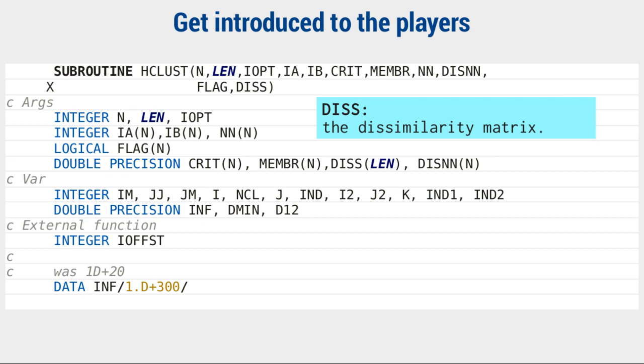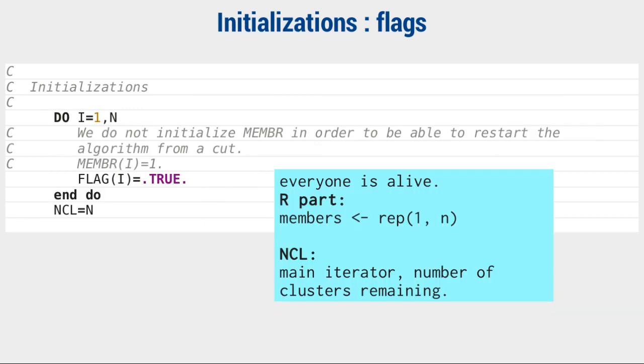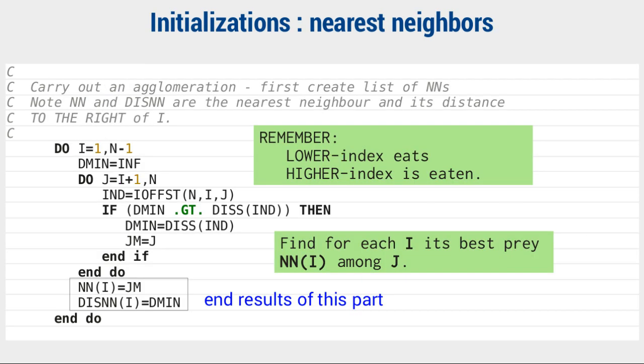After a loose definition of infinity, we start by filling flags with trues and members with one. The flag is overwritten. Resuming won't work. By the way, ncl is the main iterable, which counts the n-1 mergers, and then we initialize the nearest neighbor list.